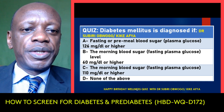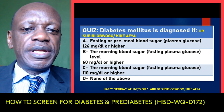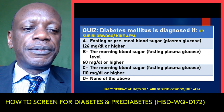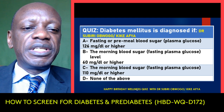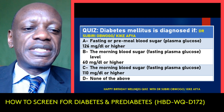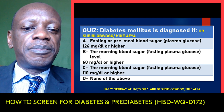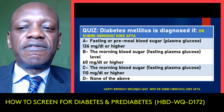Diabetes is diagnosed if fasting or pre-meal blood sugar is greater than 126 mg per deciliter or higher; when the morning blood sugar or fasting plasma glucose is more than 60 mg per deciliter or higher; when the morning blood sugar or fasting plasma glucose is more than 110 mg per deciliter or higher; or none of the above. I will share the answer at the end.